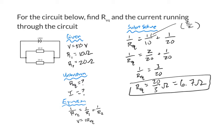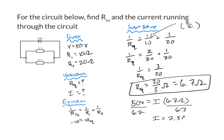So I've found REQ, and now I need to plug that into Ohm's Law to find my current. I know V is 50 volts, and that's going to equal I times REQ, which is 6.7 ohms. When I divide both sides by 6.7, I get that I is equal to 7.5 amps.